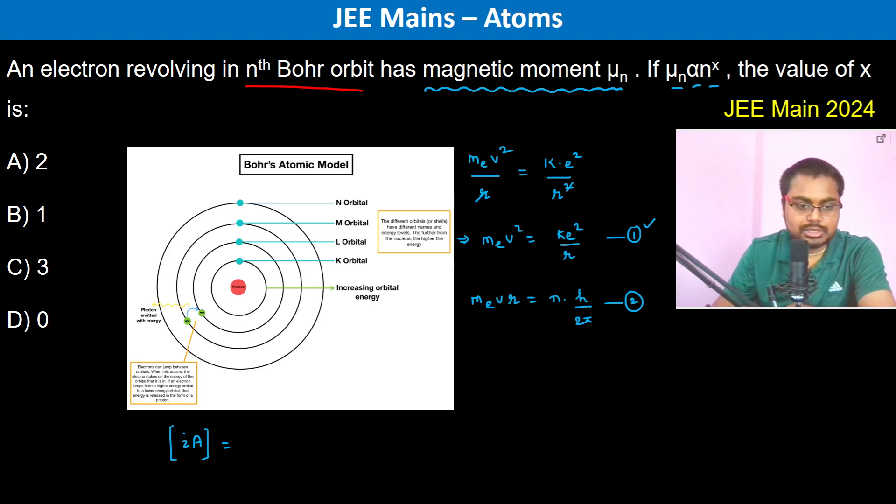So therefore what is i now? If you see, then in one revolution around the nucleus, time taken is going to be 2πr divided by v.